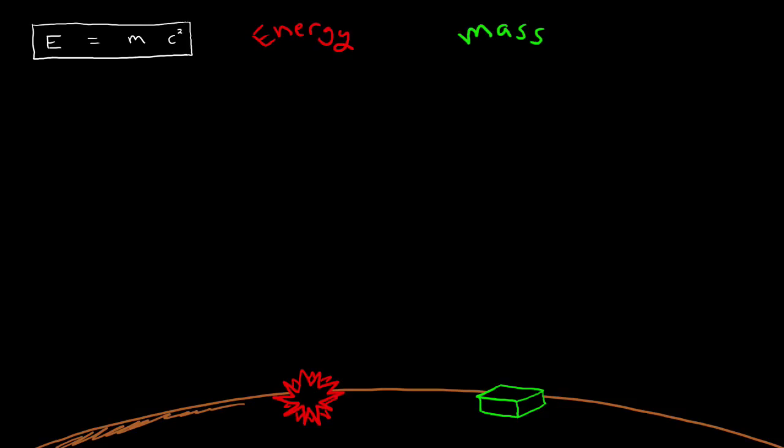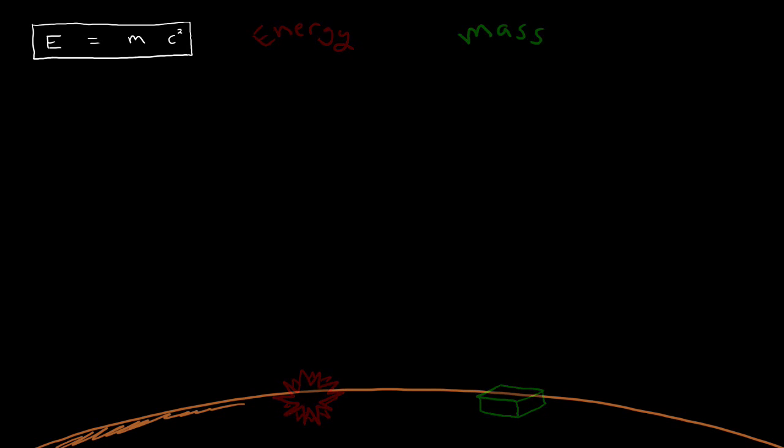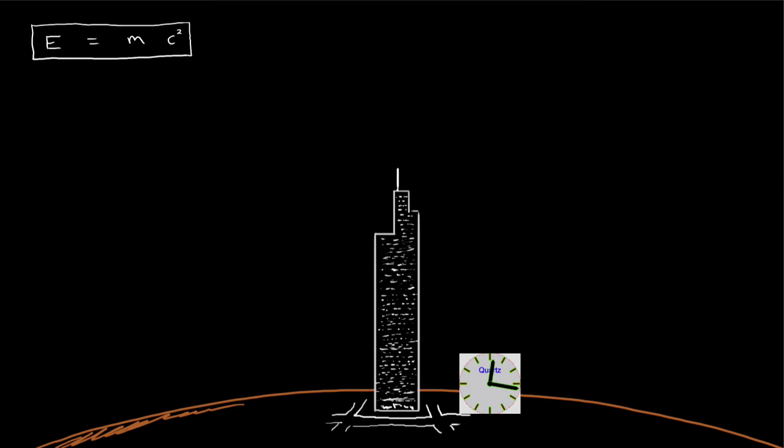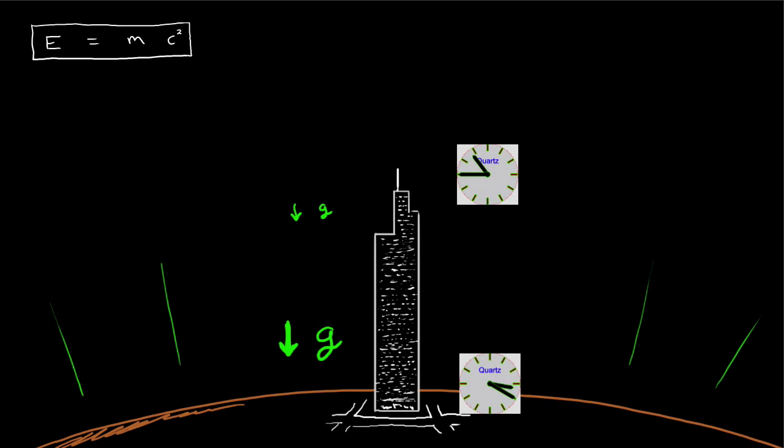The stronger the gravitational field, the slower the passing of time. This is to say that a clock at the bottom of a skyscraper runs a bit slower than an identical clock at the top of the skyscraper. Why? Because the gravitational field is a bit stronger at the bottom of the building than it is at the top. But Earth's gravity is so relatively weak that this difference in time is barely measurable. Though, interestingly, it has in fact been measured.